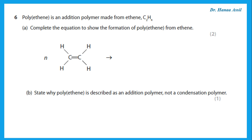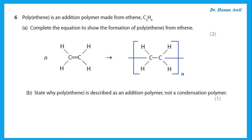Polyethene is an addition polymer made from ethene. Complete the equation to show the formation of polyethene. When starting with a monomer that is an alkene, this is called addition polymerization. We are joining many ethene monomers together. The double bond changes into a single bond, with a new single bond on the right and a new single bond on the left to join to the other monomers, and this is repeated n times.